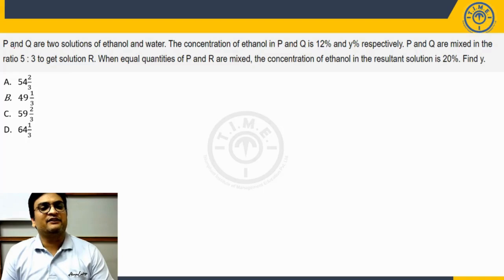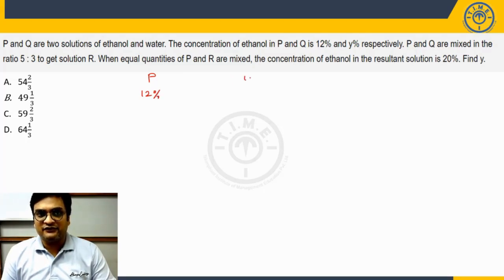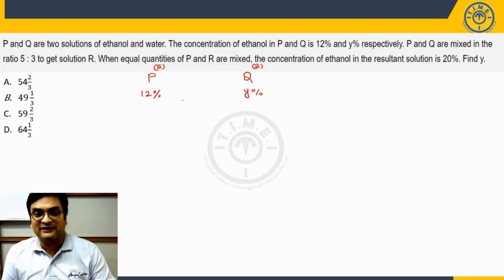Let us get started here. It says P and Q are two solutions of ethanol and water. The concentration of ethanol in P and Q is 12% and Y% respectively. If I talk about the solution P, ethanol is 12% and whereas in solution Q, ethanol is some Y%. If P and Q are mixed in this ratio 5 to 3, I am taking 5 parts of this to be mixed with 3 parts of this to get a solution R.